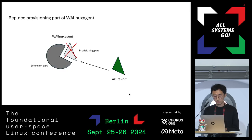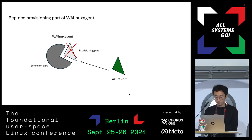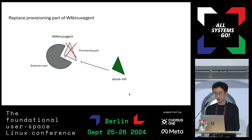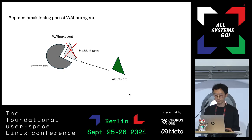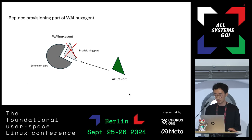I'm going to show a diagram of this. The first part is the extension part, and the second is the provisioning part. The provisioning part will be replaced by our new implementation, Azure Init. The extension part will remain implemented in Python. However, the Azure Init part will be in Rust.